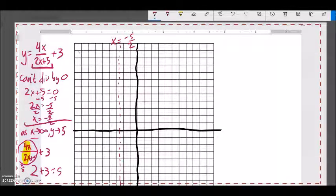So, that gives us a horizontal asymptote up here, 5, 1, 2, 3, 4, 5. So that would be y equals 5.